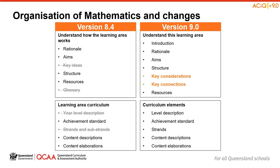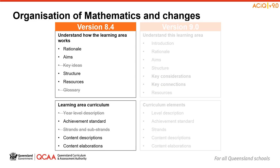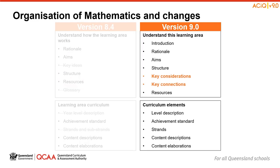Now that we know where mathematics is in the three-dimensional representation of the curriculum, let's look at its structure, which helps us to organise our teaching and assessment for mathematics. The changes, especially in the language and grouping of ideas, help to sharpen our understanding of what mathematics is. The organisation of Australian Curriculum Version 8.4 was in two parts – understanding how the learning area works, followed by learning area curriculum. Moving to Version 9, the changes in the language and grouping of ideas help to sharpen our understanding of what mathematics is.